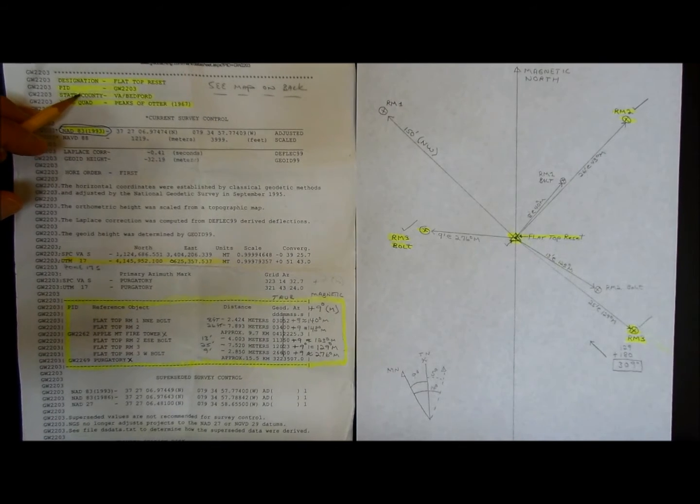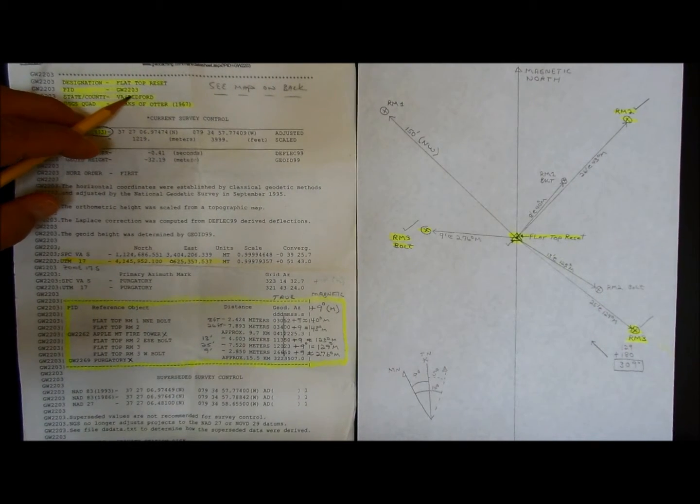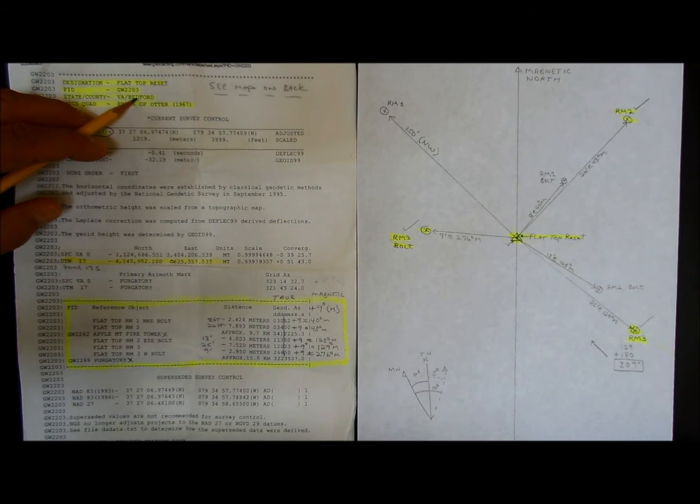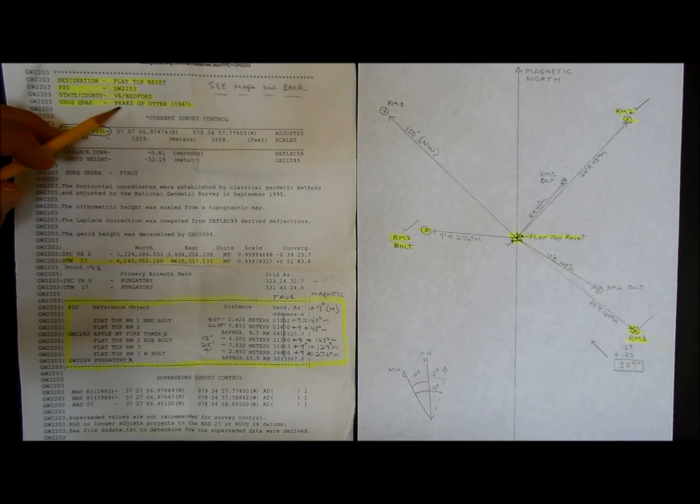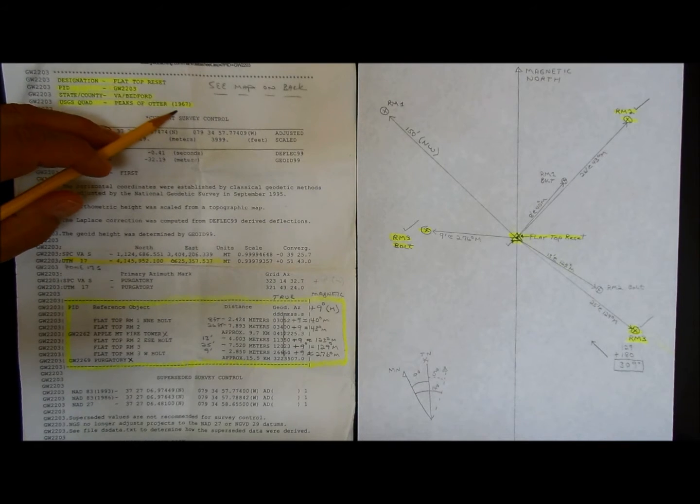This tells you the state and the county it's located in. In this case, it's in the state of Virginia, Bedford County. The USGS quadrangle map name is Peaks of Otter 1967.